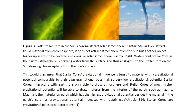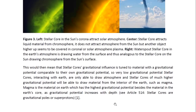This would mean that stellar cores' gravitational influence is tuned to material with a gravitational potential comparable to their own. Very low gravitational potential stellar cores interacting with Earth are only able to draw atmosphere, and stellar cores of much higher gravitational potential will be able to draw material from the interior of the Earth, such as magma — the material on Earth which has the highest gravitational potential besides the material in the Earth's core, as gravitational potential increases with depth.